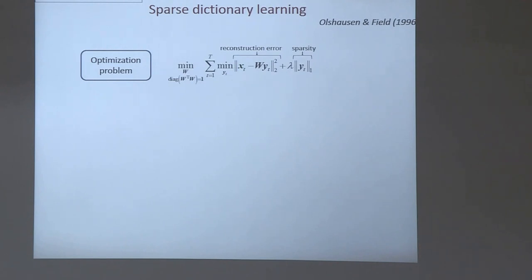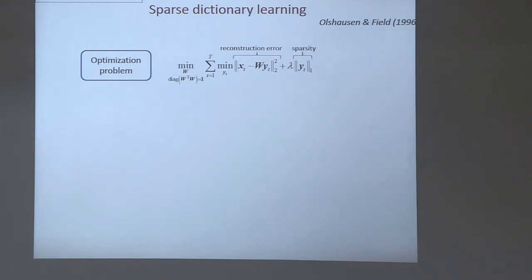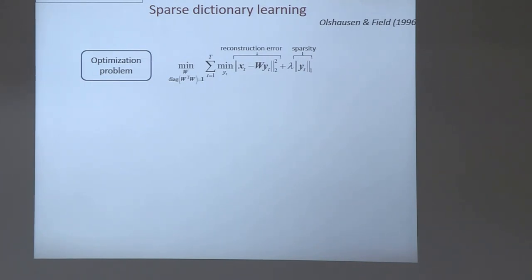For each stimulus, we have to find the optimal Y_t by solving this optimization, and then find the dictionary W, normalized to one, that optimizes the whole cost. We now favor just the non-negativity prior, which actually produces sparse output because of the competition between components. This was historically the first kind of over-complete dictionary learning framework.